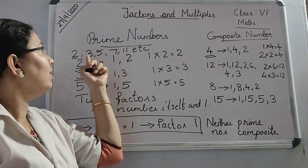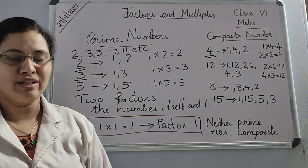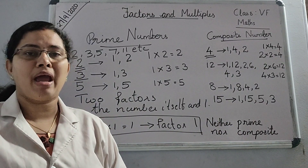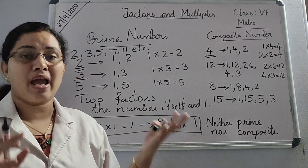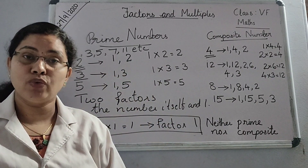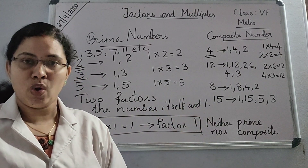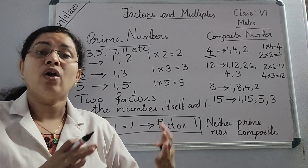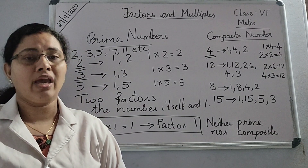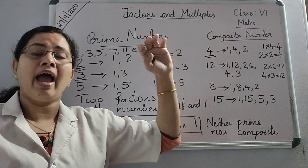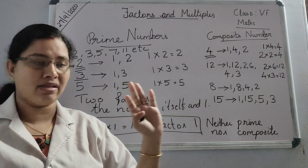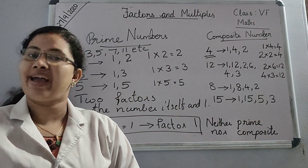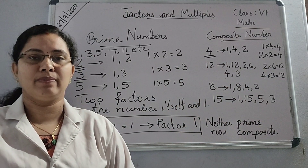If you look at odd numbers, which is the smallest odd prime? It is 3. To remind once again: 1 is neither a prime number nor a composite number. Prime numbers have only 2 factors — the number itself and 1. Composite numbers have 3 or more factors — the number itself, 1, and at least one more factor. Thank you.